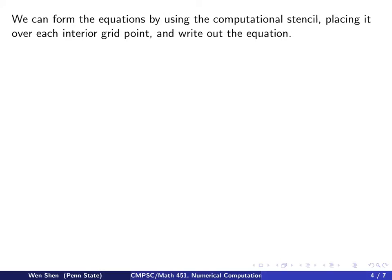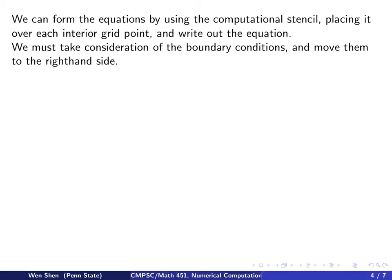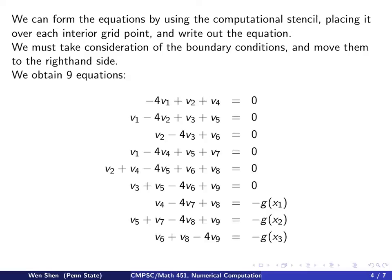We can write out each equation for a given (i,j) going through all the grid points containing my unknowns by using the computational stencil. You place the stencil over each interior point, and then you write out the equation using the corresponding weight at each point. Also, if the stencil has one leg touching the boundary point, we must take consideration of the boundary conditions, and you would move that to the right-hand side.